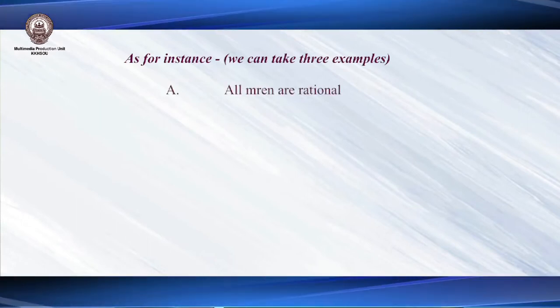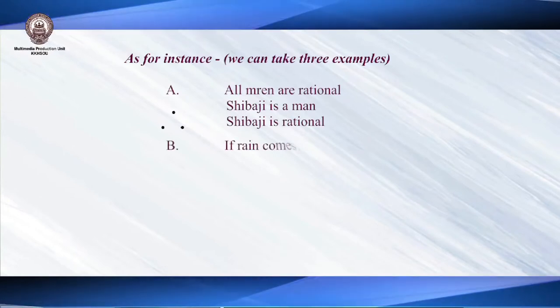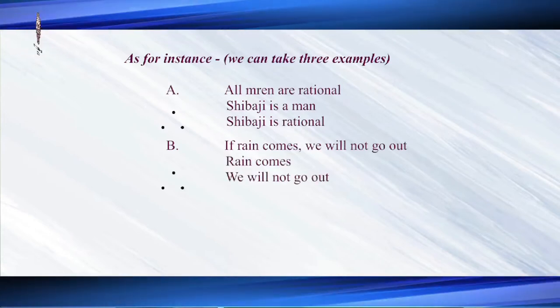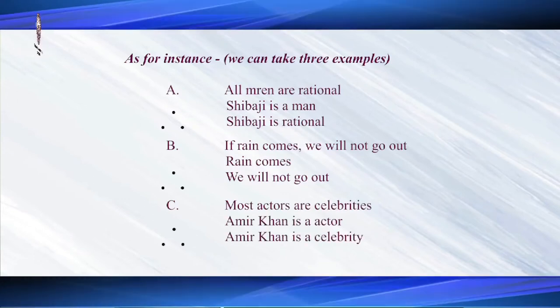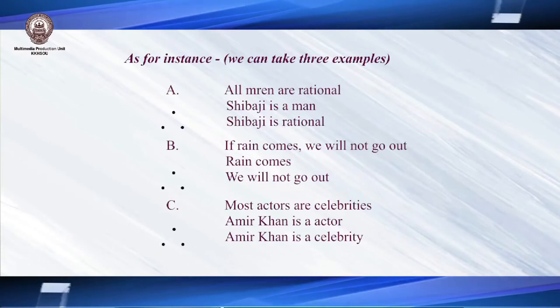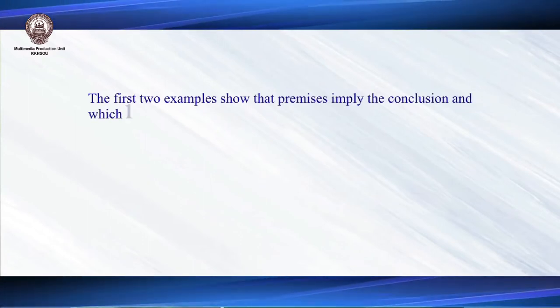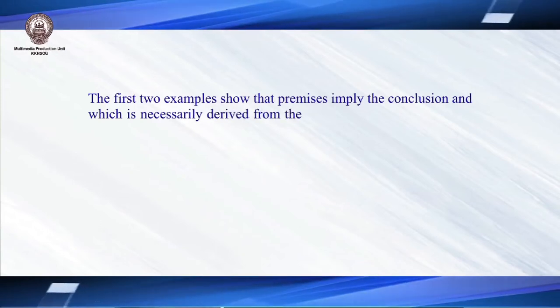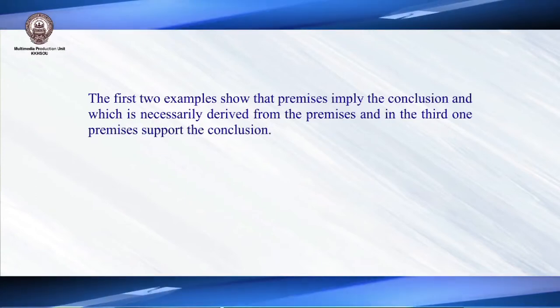As examples, consider the following three arguments. First: All men are rational; Sivaji is a man; therefore Sivaji is rational. Second: If rain comes, we will not go out; rain comes; therefore we will not go out. Third: Most actors are celebrities; Amir Khan is an actor; therefore Amir Khan is a celebrity. The first two examples show that the premises necessarily imply the conclusion. In the third one, one premise supports the conclusion with some probability.